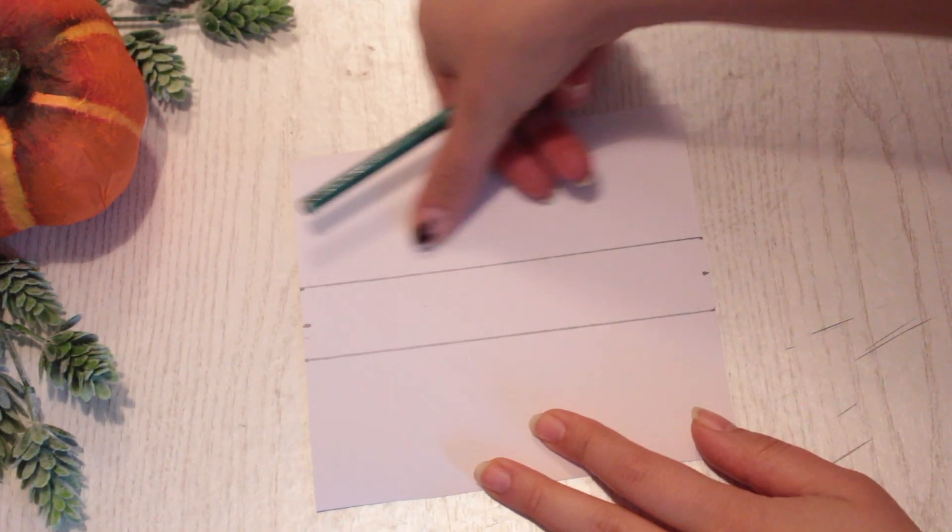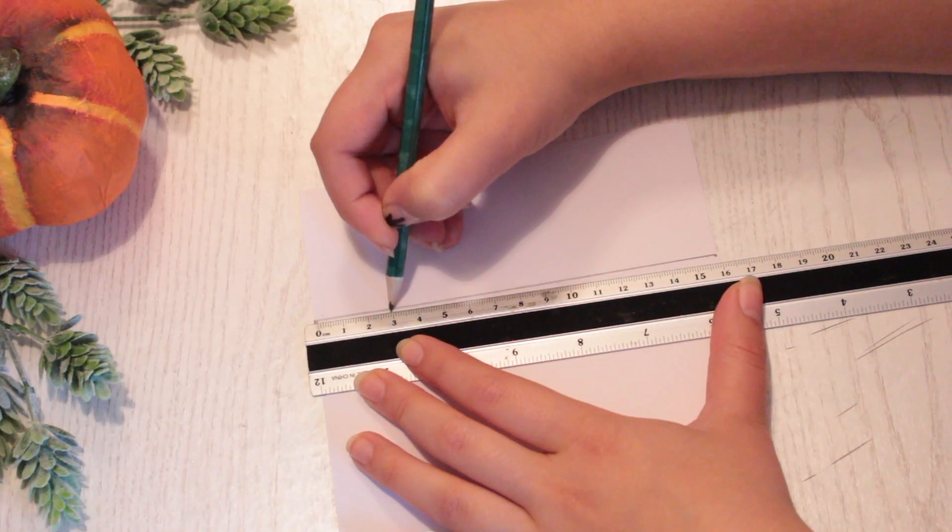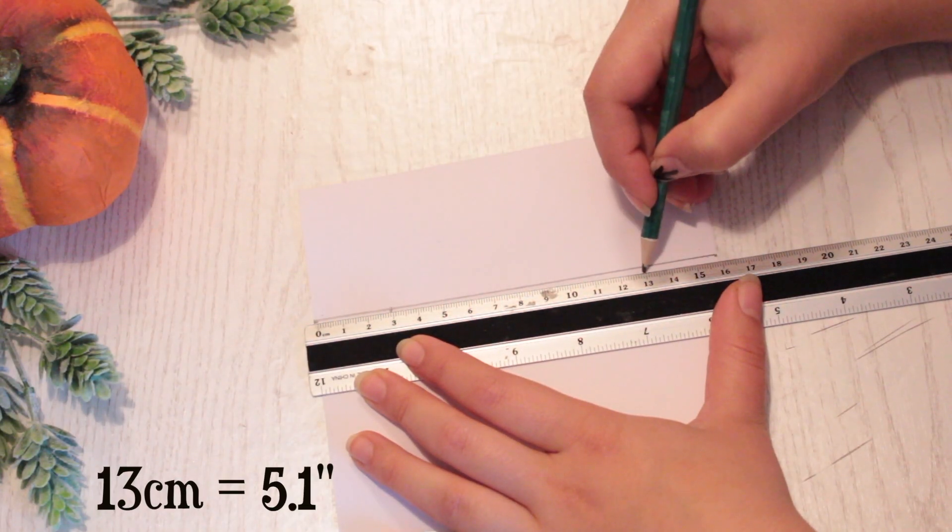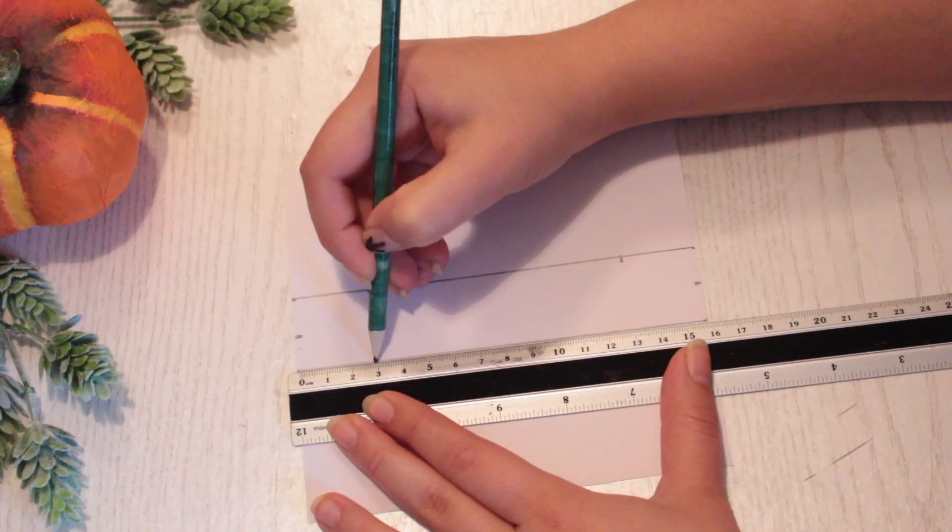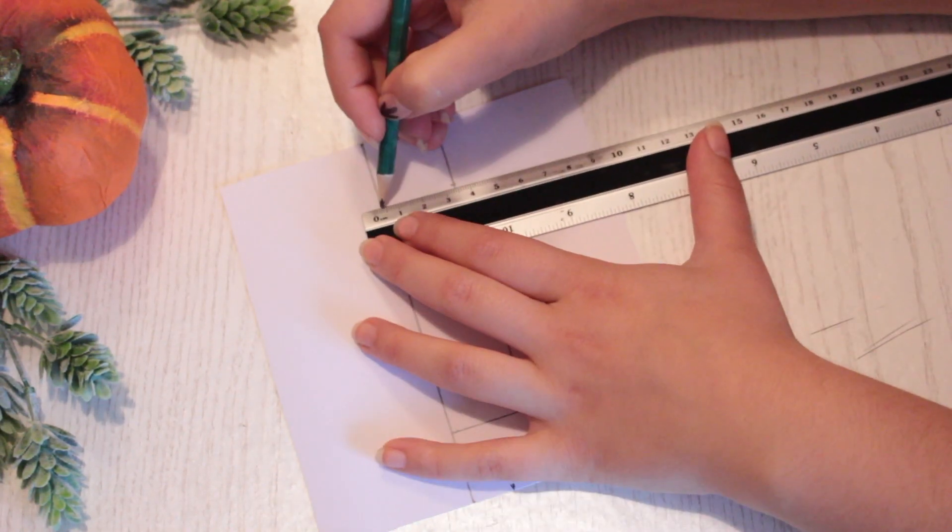Divide this rectangle into head, body and legs by making markings at 3 and 13 cm. Repeat this on the opposite side as well and then make lines across.